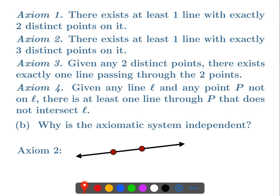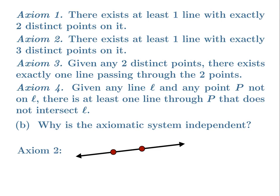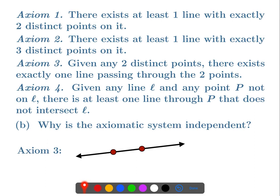Now let's look at axiom three's independence. We need axioms one and two to be true, so we need both a line with two points and a line with three points. With just those two lines, axiom three is not satisfied. But axiom four holds: taking either line, any point not on it has a parallel line through it. So axioms one, two, and four all hold but axiom three does not — axiom three is independent of the other axioms.